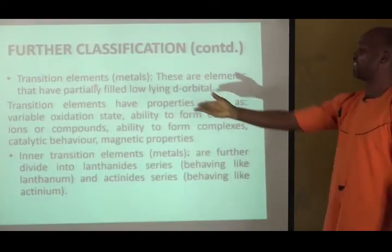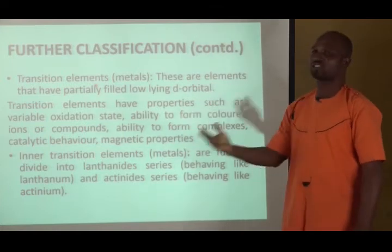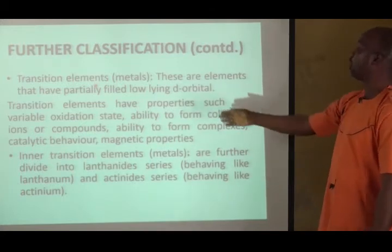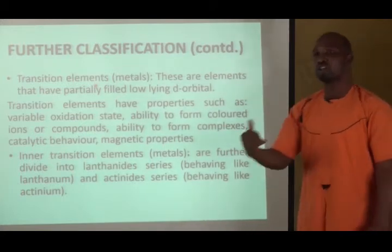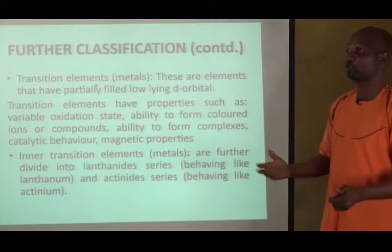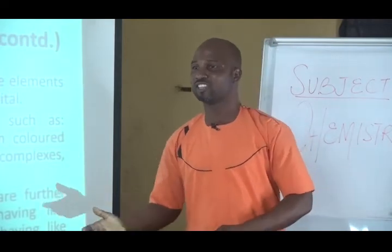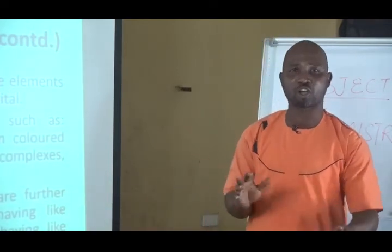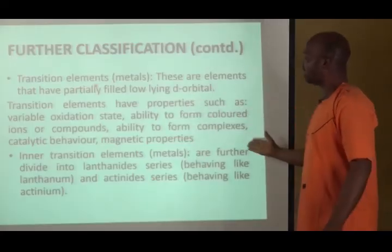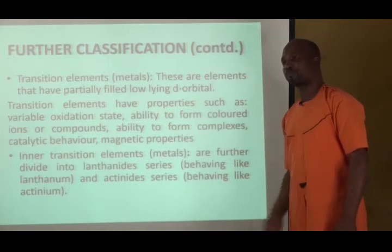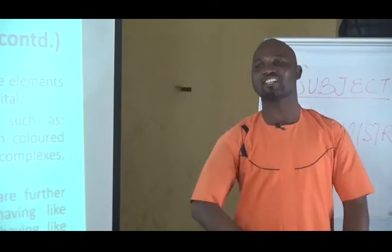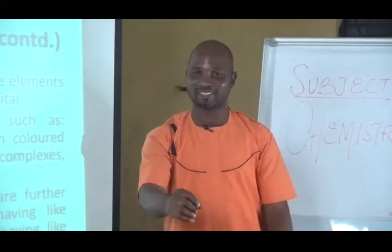Transition elements have special characteristics like variable oxidation state — for instance, copper and iron can exist as 2+ and 3+ ions. They have the ability to form colored compounds: copper(II) sulfate solution is blue, iron(III) sulfate solution is brownish, and so on. Other properties include ability to form complexes, catalytic behavior, and magnetic properties including diamagnetism and paramagnetism.